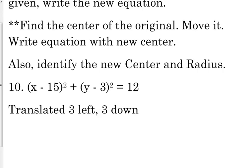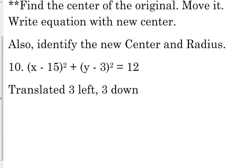Let's look at the last one there on that front page, number 10, because I wanted to do one that had a translation in both directions. You can move it in both directions, or you can just move it in one direction, horizontally or vertically, or both. So x minus 15 squared plus y minus 3 squared equals 12 is our original equation. Our original center is 15, 3.